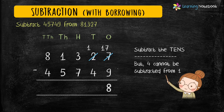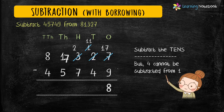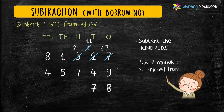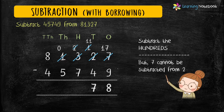Let's move to the tens place. But again, 4 cannot be subtracted from 1, so we will borrow from the hundreds place. 3 becomes 2 and 1 becomes 11. 11 minus 4 equals 7. Let's move to the hundreds place. 7 cannot be subtracted from 2, so let's borrow from the thousands place. 1 becomes 0 and 2 becomes 12. 12 minus 7 equals 5.